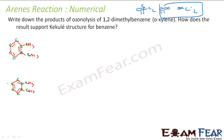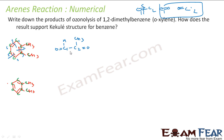Let me number the carbons 1 through 6. Breaking the bond between C1 and C2: C1 gets a ketone and C2, which has a CH3 group attached, also gets a ketone — giving one product with one hydrogen on C1 and a CH3 on C2. This product is 1,2-oxypropane (methylglyoxal).